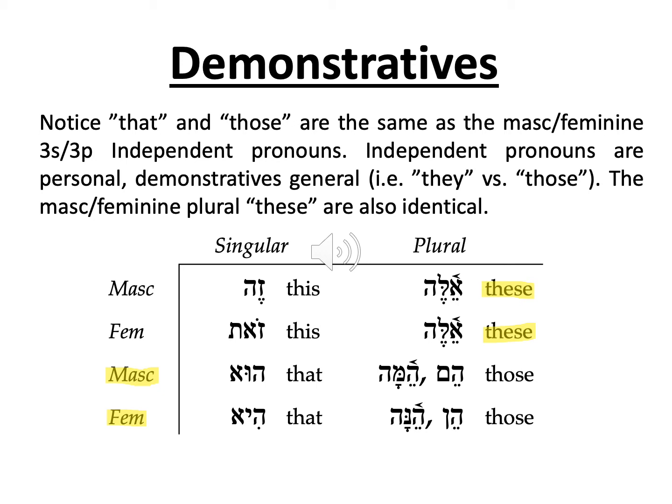The plural masculine and feminine are also the same as each other — 'these' — which means only one form to learn, which is always nice. The singular masculine and feminine — 'this' — should be simple to memorize.